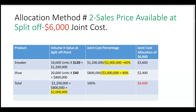Notice when we use the sales price available at split-off we got a 60/40 split, but when we used pure volume and ignored the sales prices it came out to one-third and two-thirds.